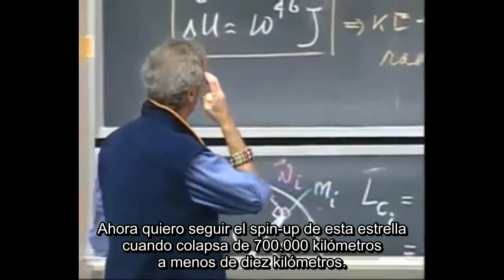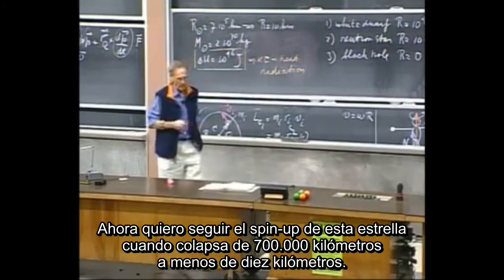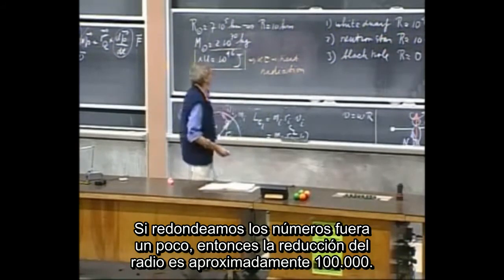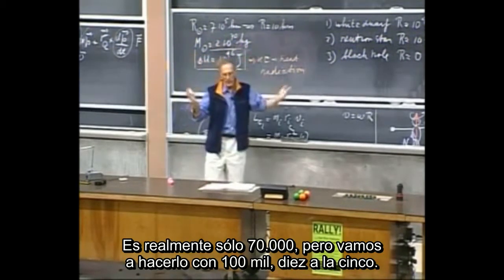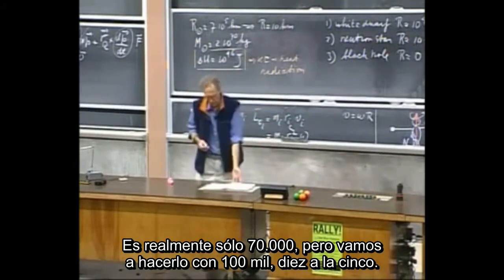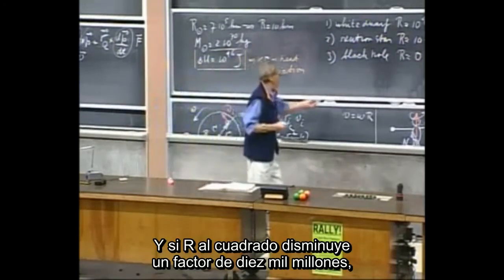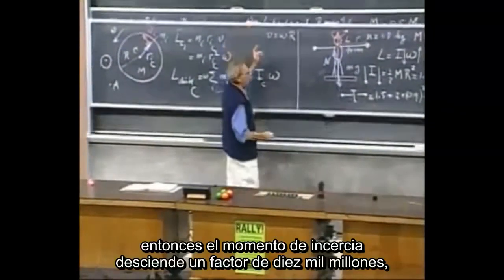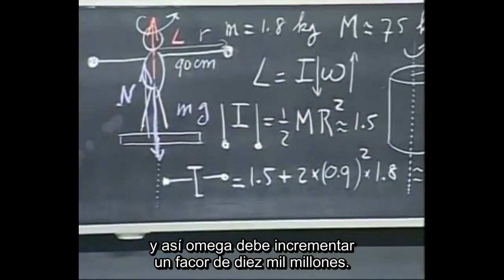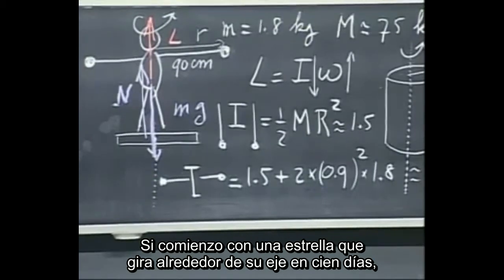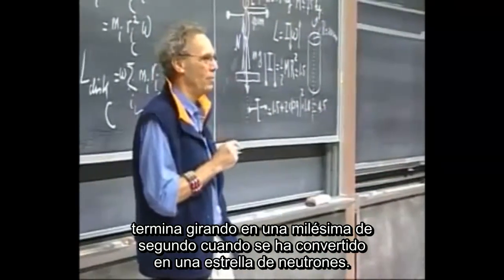I now want to pursue the spin-up of the star when it collapses from 700,000 kilometers to 10 kilometers. Rounding off, the reduction in radius is about a factor of 100,000 — 10 to the 5. That means r squared goes down by a factor of 10 billion, so the moment of inertia goes down by a factor of 10 billion, and omega must go up by a factor of 10 billion. If you started with a star rotating about its own axis in 100 days, it ends up rotating in one millisecond when it has become a neutron star.